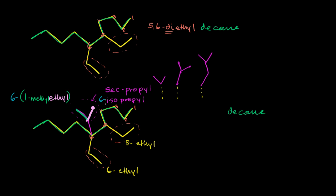So this would be 5-6-diethyl. So even though D, well D comes even before E, but you don't even count that prefix. The E is what matters. Diethyl, and then we could say diethyl-6-isopropyl, this is the common name, 6-isopropyl decane. This would be the common name for it.